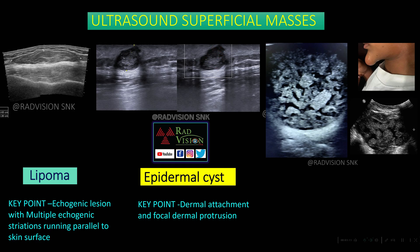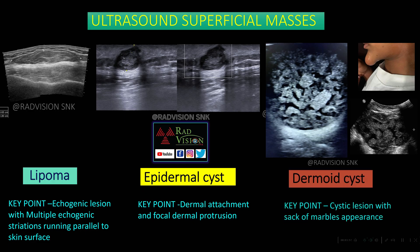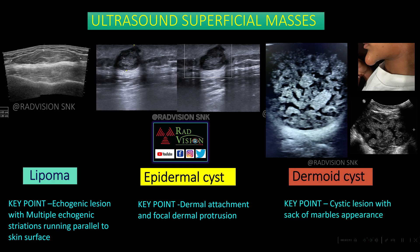This cystic lesion is noted in the neck, specifically in the floor of the mouth. Whenever you see cystic lesions in the floor of the mouth or neck region with multiple echogenic bar-like structures within it giving a 'sack of marbles' appearance, this is a case of dermoid cyst. These are the common superficial soft tissue masses.